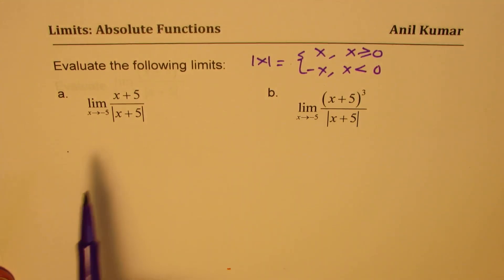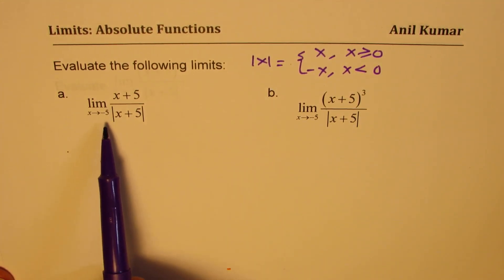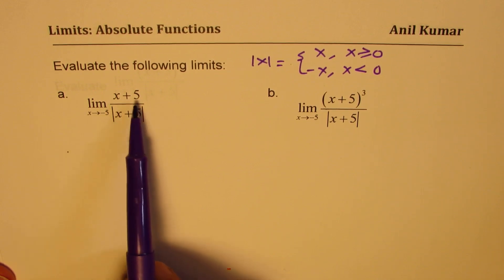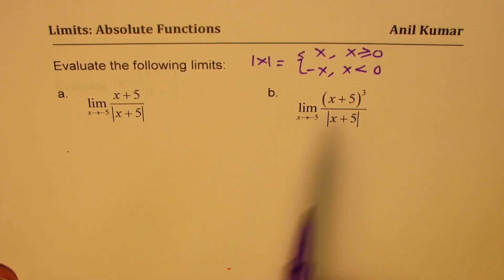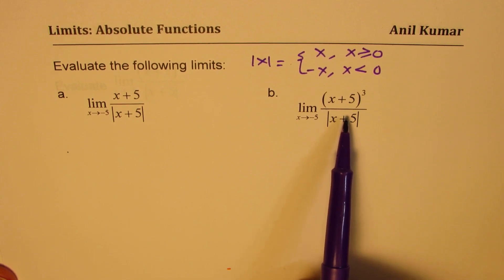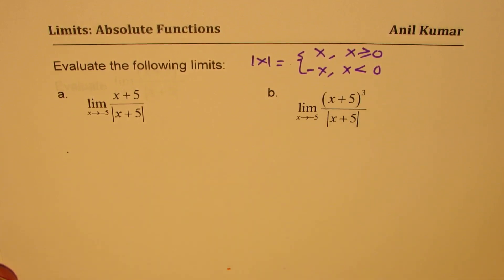We have two questions. The first one is the limit as x approaches minus 5 of (x+5) divided by the absolute value of (x+5). The second one has the numerator portion cubed. You can pause the video, answer these questions, and then look into my suggestions.